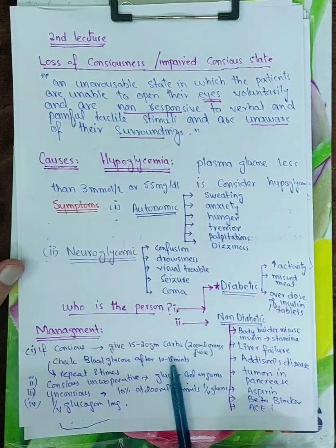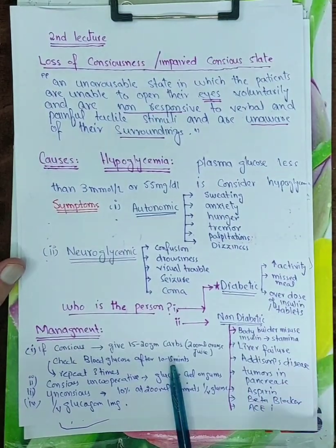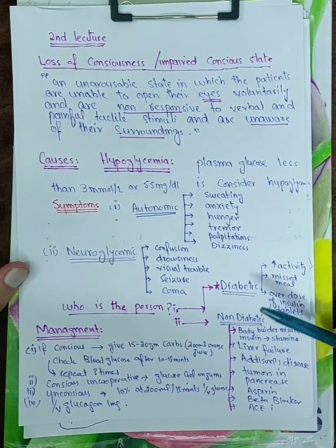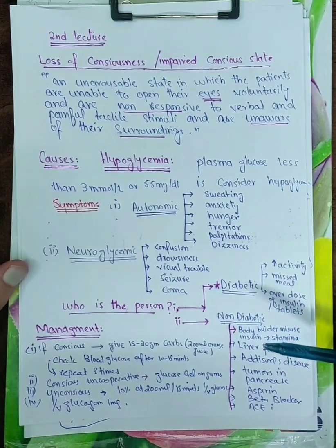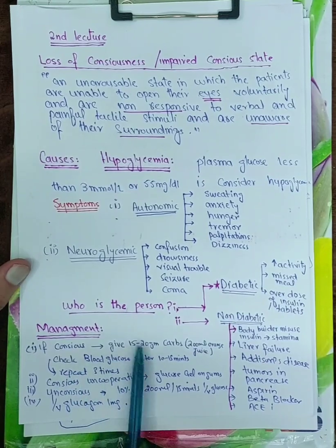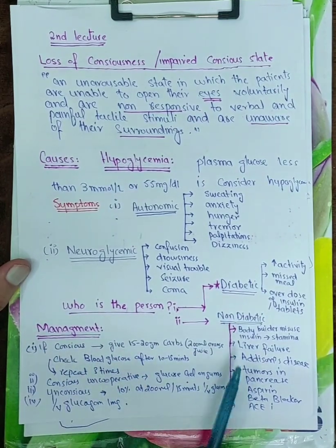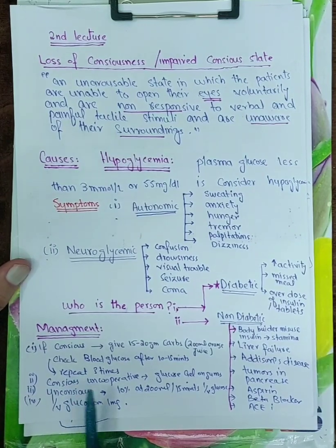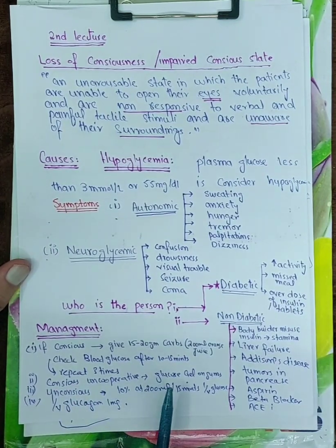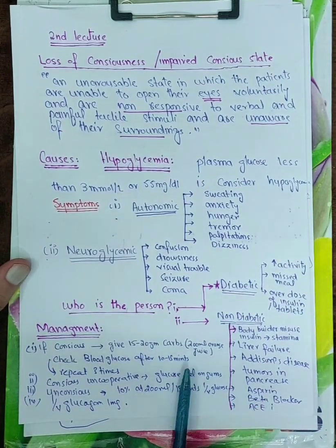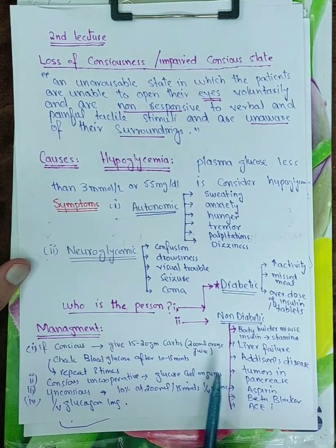Or if he didn't respond to it, you can repeat this management step 3 times. Number second, if he is conscious but uncooperative, give him glucose gel or put glucose gel on his gums or teeth.